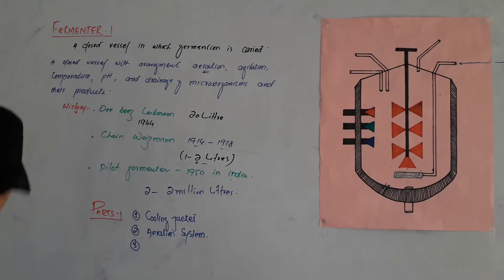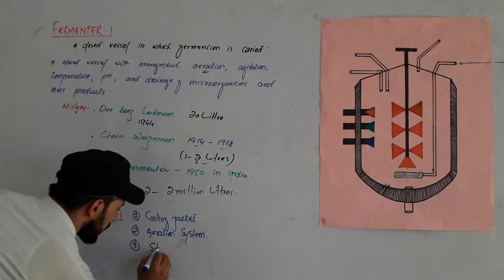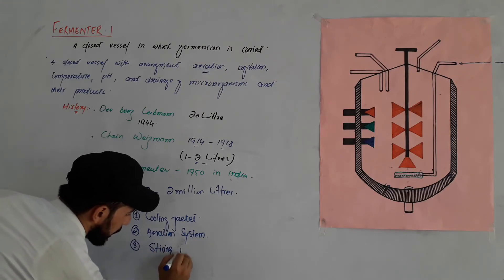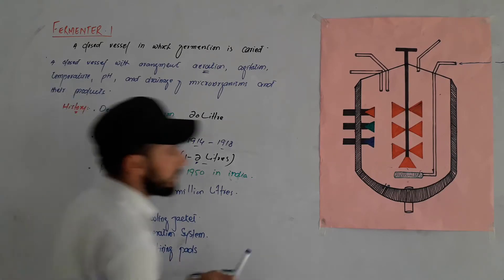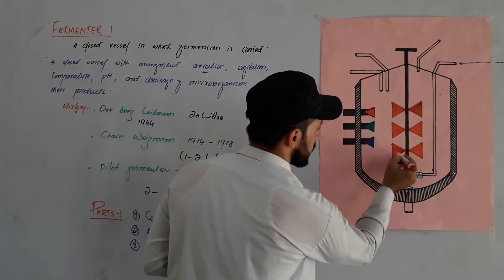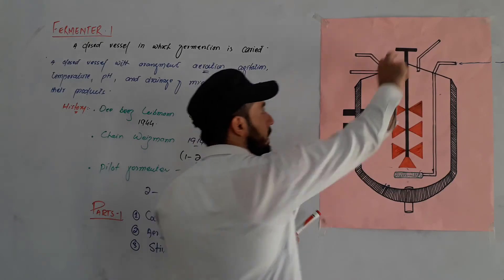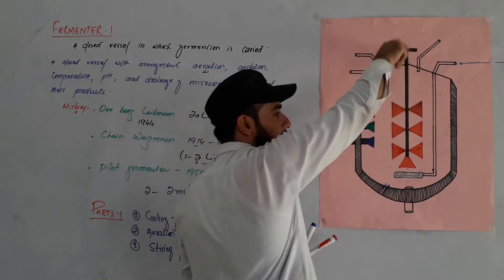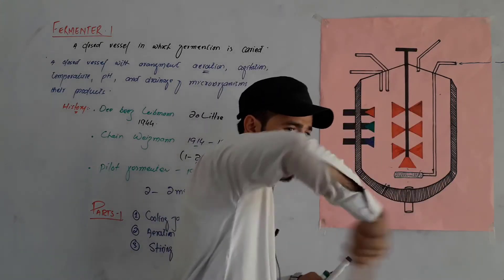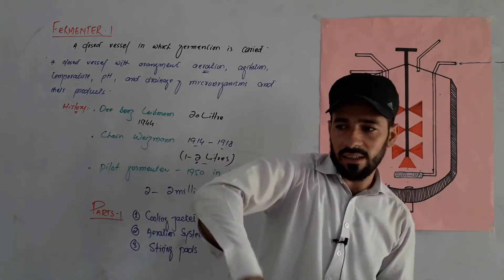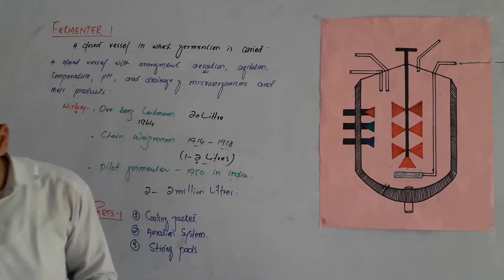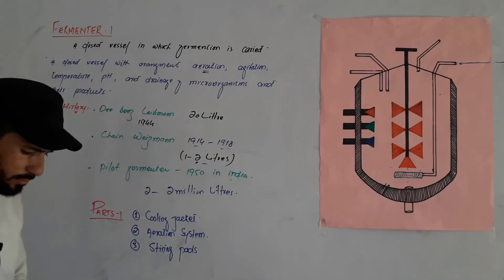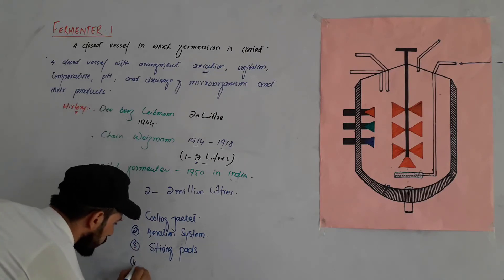Next part is the stirring pads. The stirring pads are like blades inside the fermenter. They rotate and cause mixing and agitation inside the vessel. The stirring pads also help introduce sterile air into the fermenter.